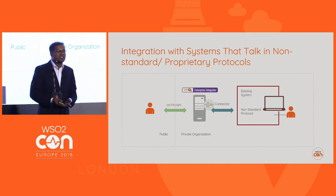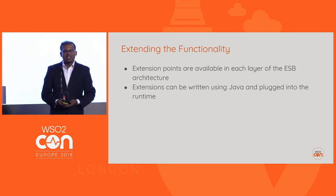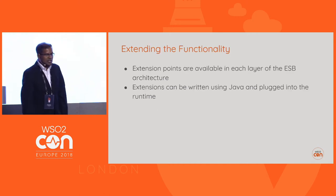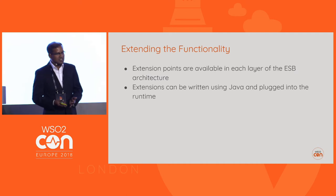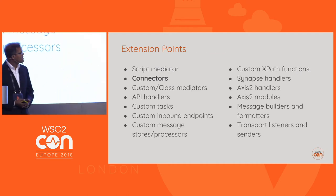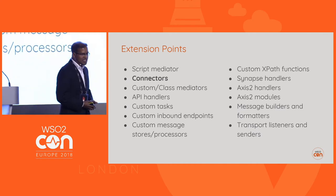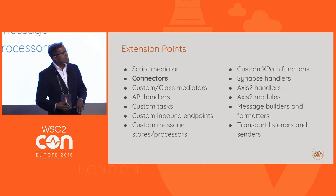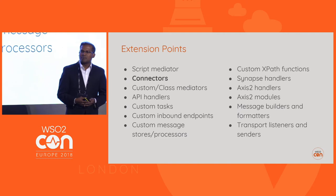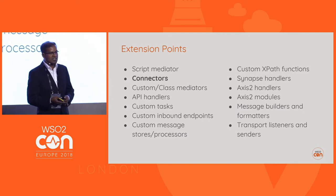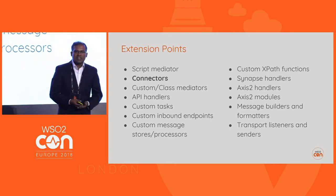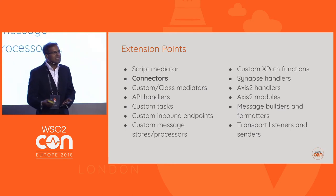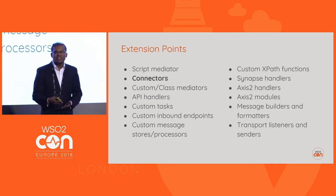But in case the connector is not available, we will have to implement that connector. Within the Enterprise Integrator, we have a large number of extension points which we can use to perform these additional functions. Using script mediators or custom class mediators, we can add functionality not already supported by the mediators. We also have custom XPath functions, Synapse handlers, access to handlers, message formatters and builders, and many more extension points which we can use to implement functionality to connect with any system. Practically, we can integrate with any system out there.